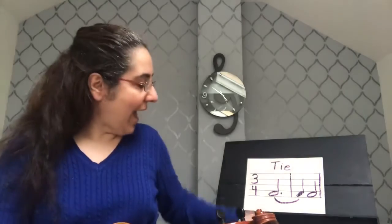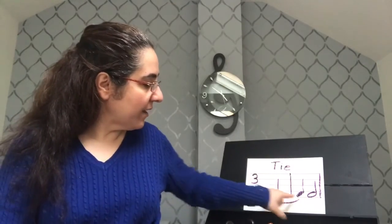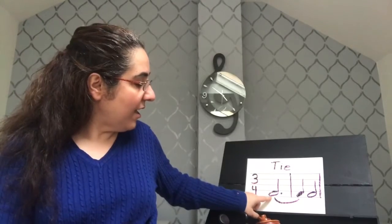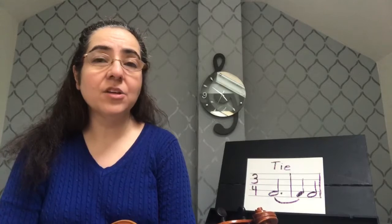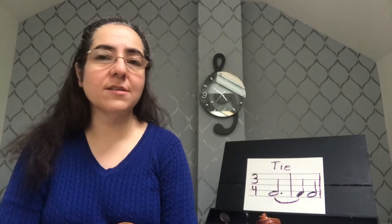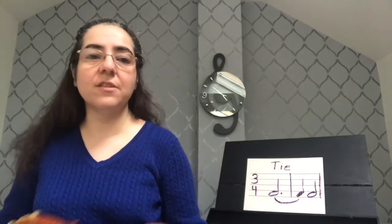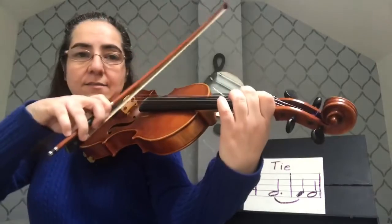Another thing you'll notice in this example is I can mix rhythmic values. I can mix a dotted half note with a quarter note as long as they're the same letter name. You can have a whole note tied to a half note as long as both notes are an F sharp, or a D, or an A. It's just the letter name that has to be the same, not the rhythm value. This example would sound like this.